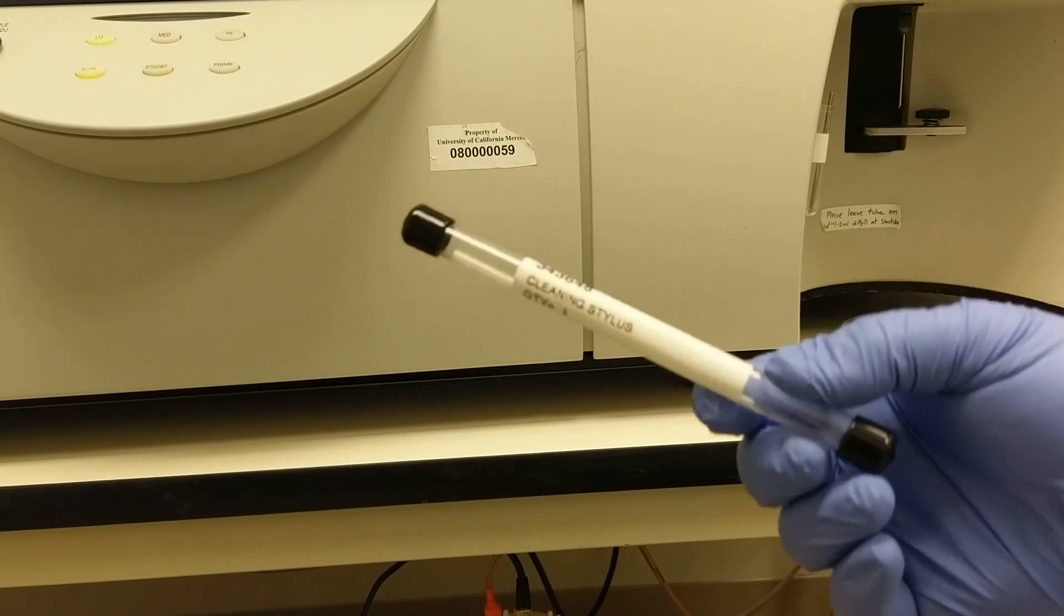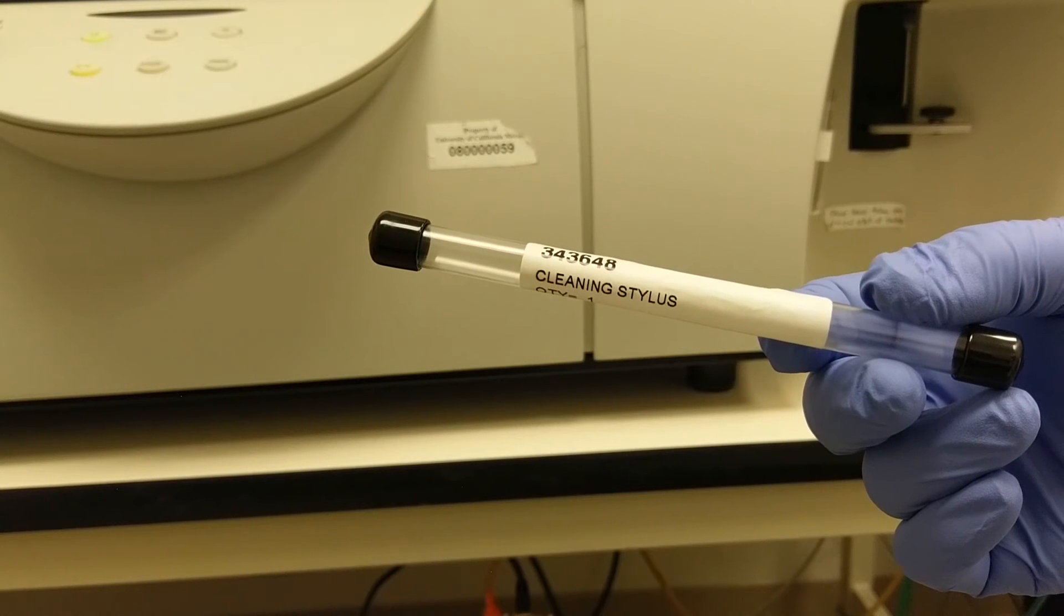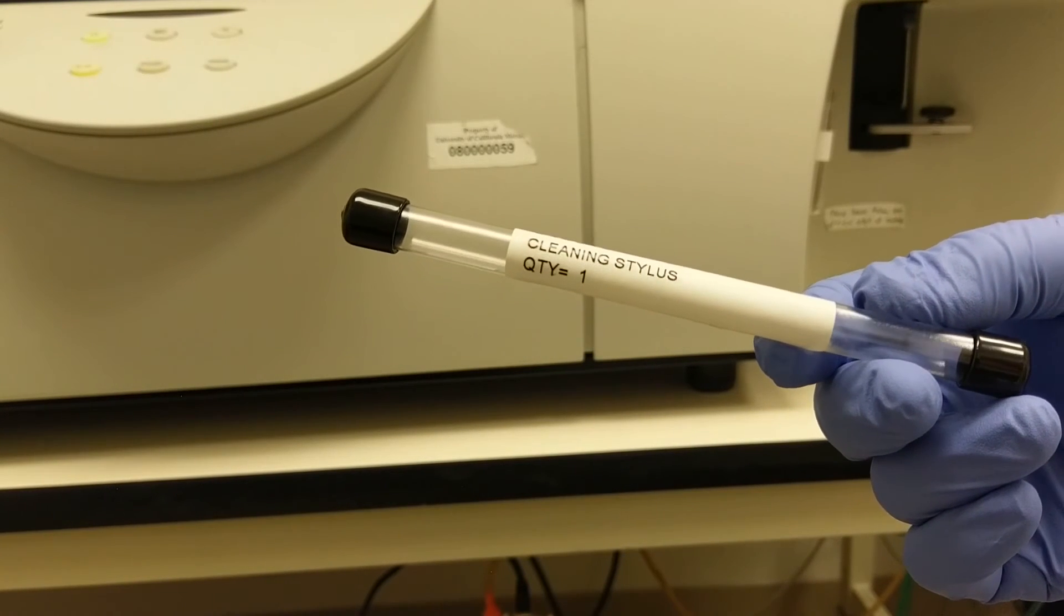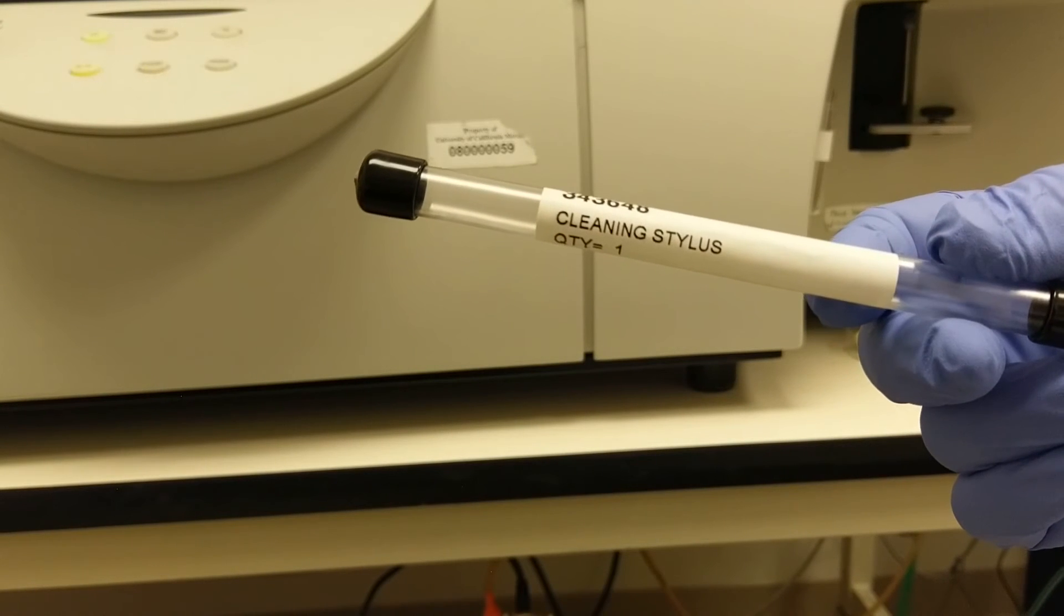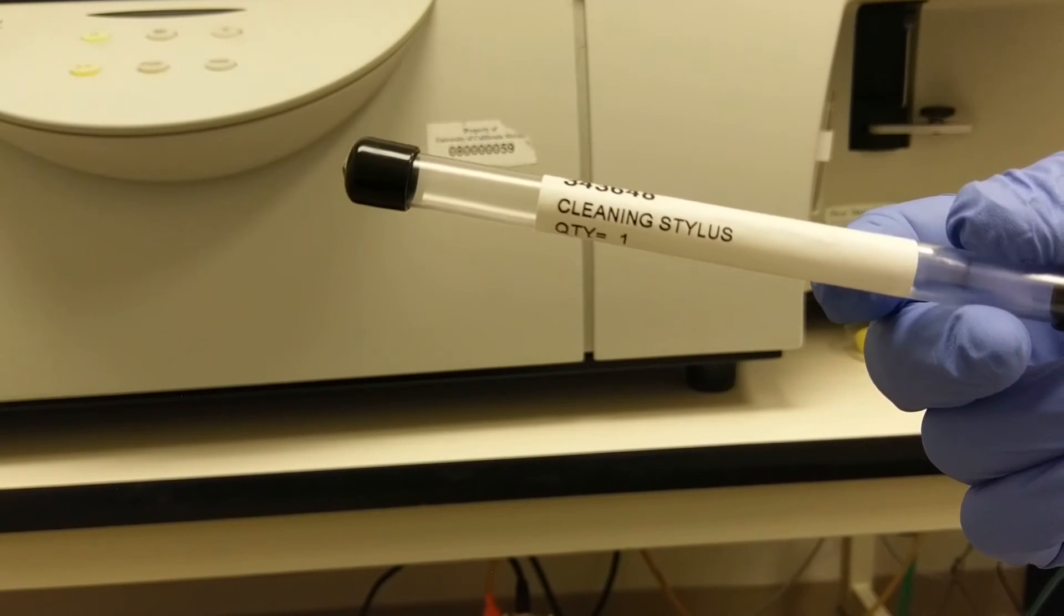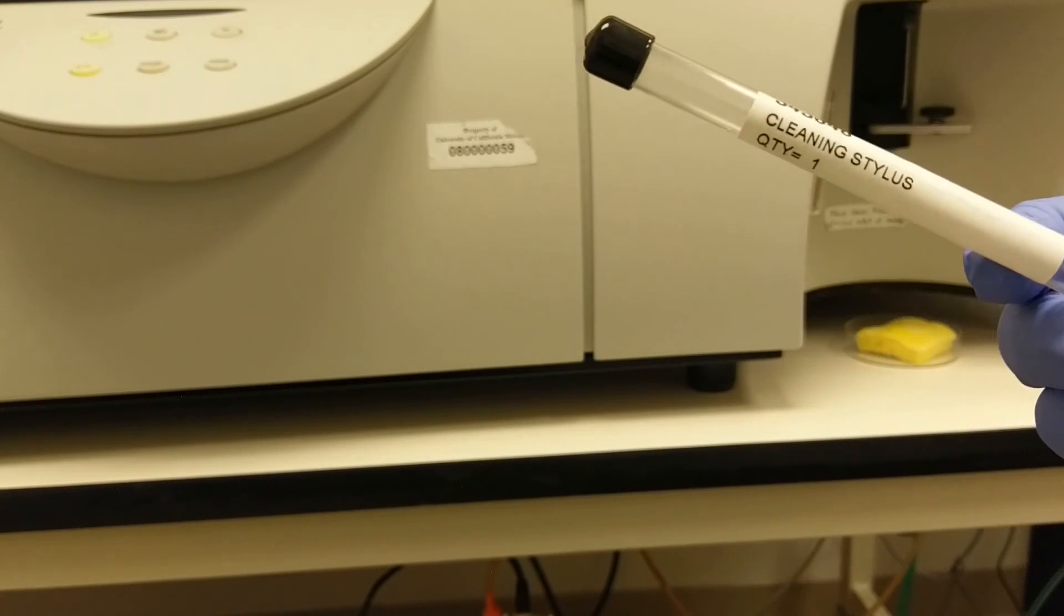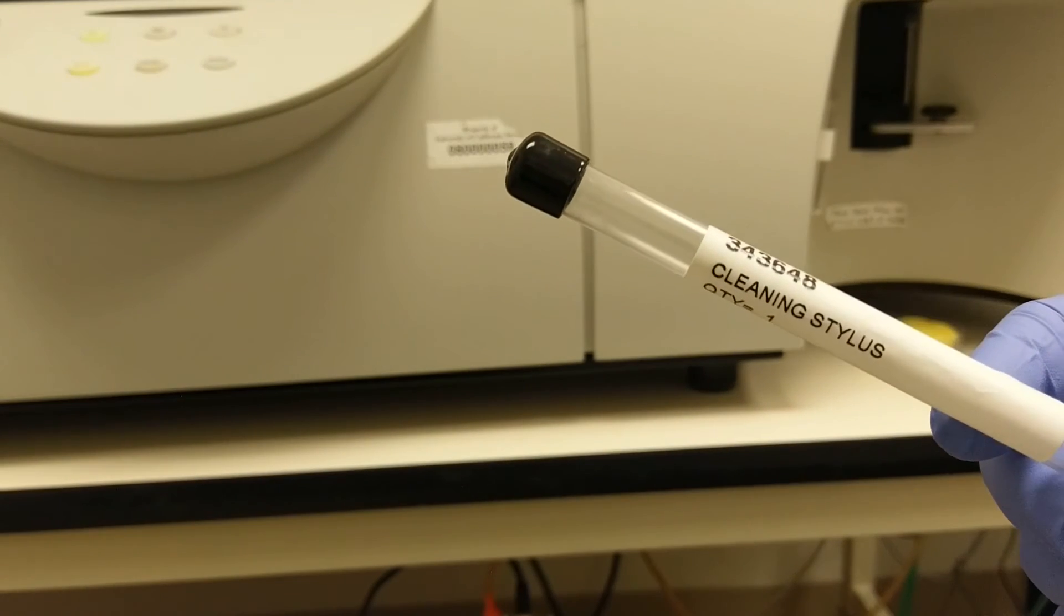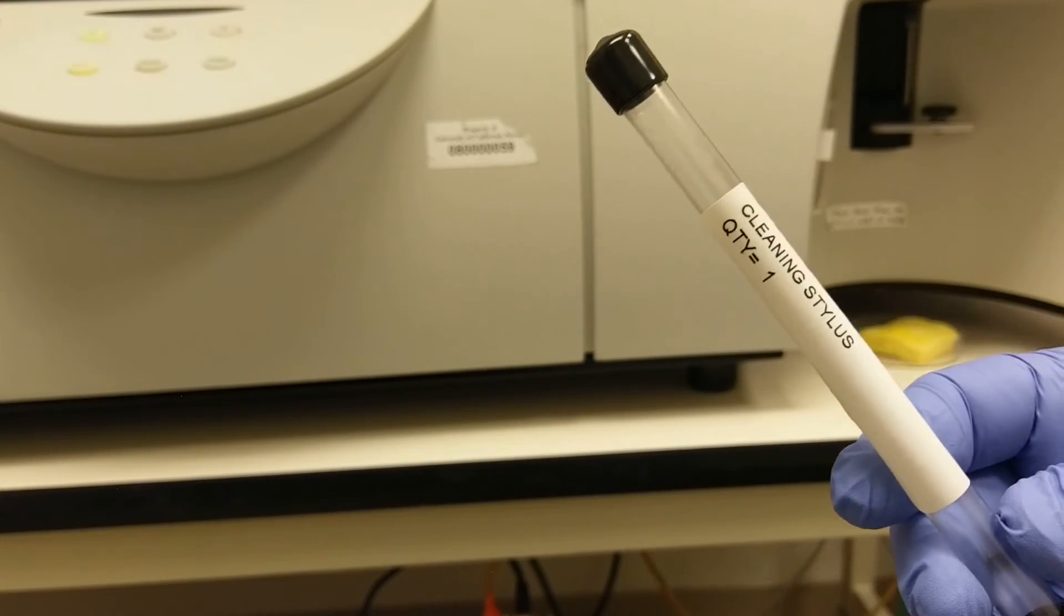If pushing with this syringe is not working, the last sort of line of defense is these fine wires called cleaning stylus. And both the cleaning stylus and the syringe with tubing can be found in the drawer underneath the LSR. The cleaning stylus is kind of the nuclear option, and I would not recommend doing it unless you were trained on doing it.